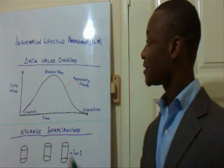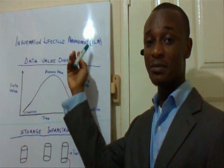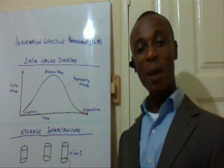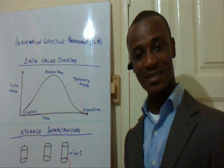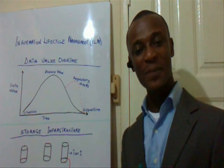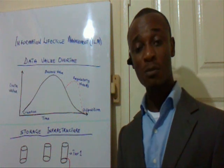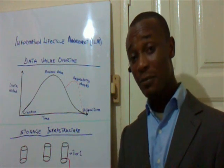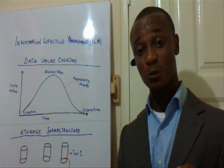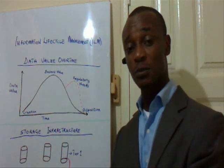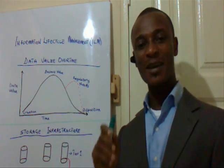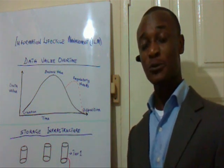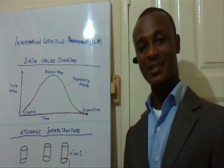One answer to this question is information lifecycle management, also known as ILM. ILM is where policies, procedures, and practices are used to align the business value of information with the most appropriate and cost-effective IT infrastructure, from the time information is conceived through its final disposition. So, it is the business value of information that governs the technology part of it — the I counts before the T.